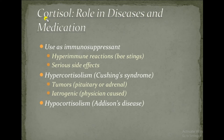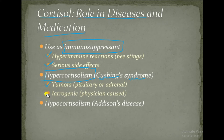Cortisol plays a role in disease and is used as an immunosuppressant for hyperimmune reactions, though it has serious side effects. Hypercortisolism occurs in Cushing's syndrome. It may be due to excessive pituitary, adrenal, iatrogenic, or other causes. Hypercortisolism has two variants: Cushing's syndrome and Cushing's disease.